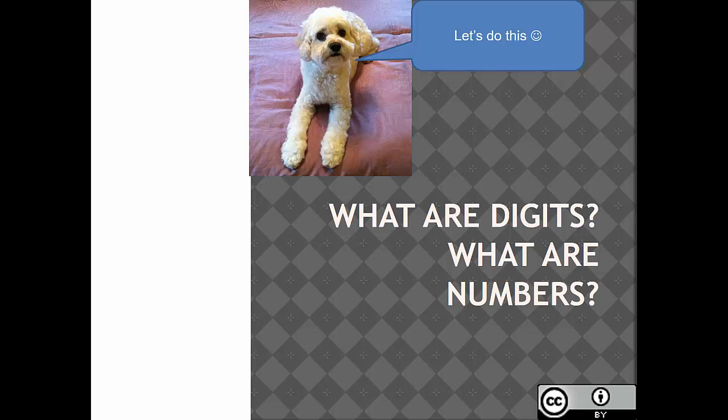Digits. What are numbers? Digits are the ten symbols we use to make numbers in the decimal system.